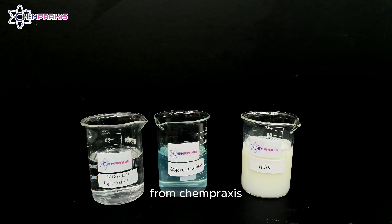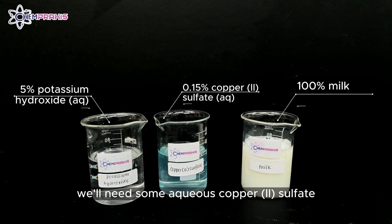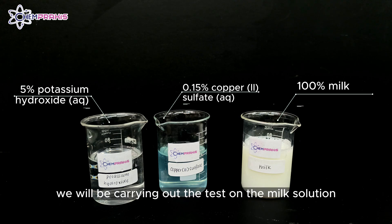Hello, we're from Chem Praxis. Today we'll be carrying out a biuret test to test for protein. To carry out a biuret test, we need some aqueous copper(II) sulfate and aqueous potassium hydroxide. We'll be carrying out the test on a milk solution which contains protein.